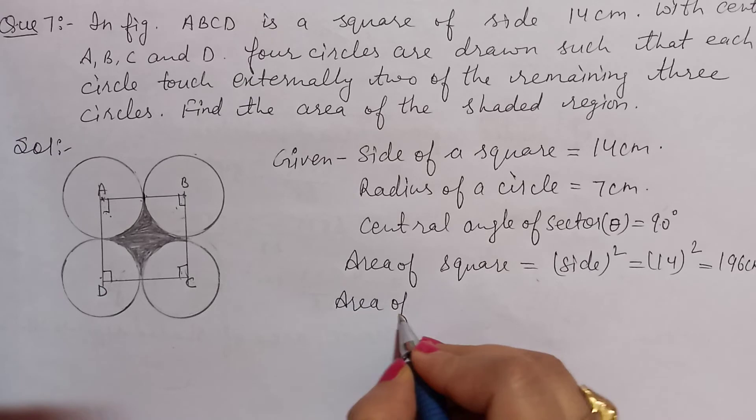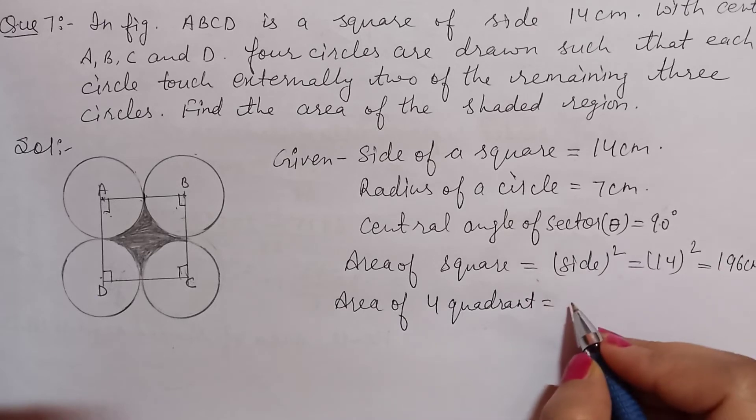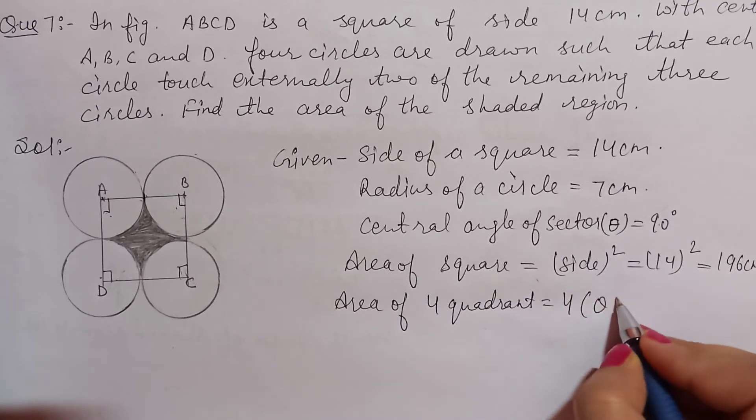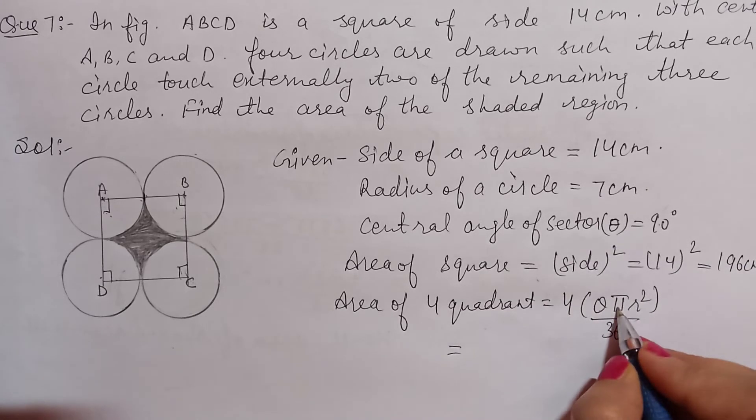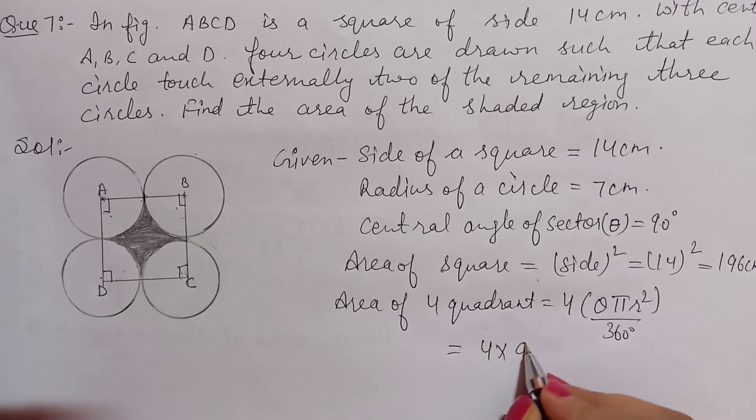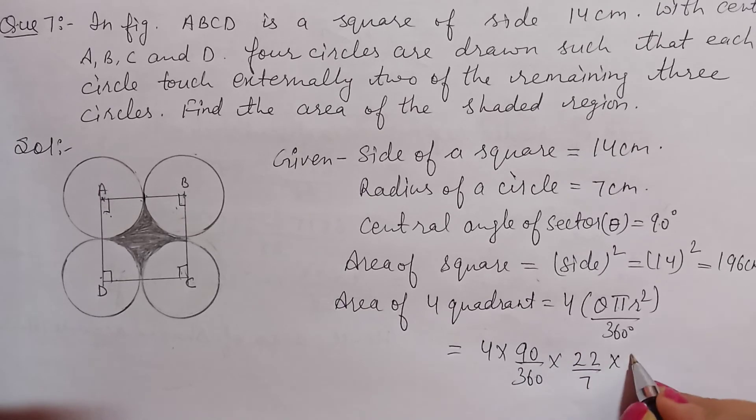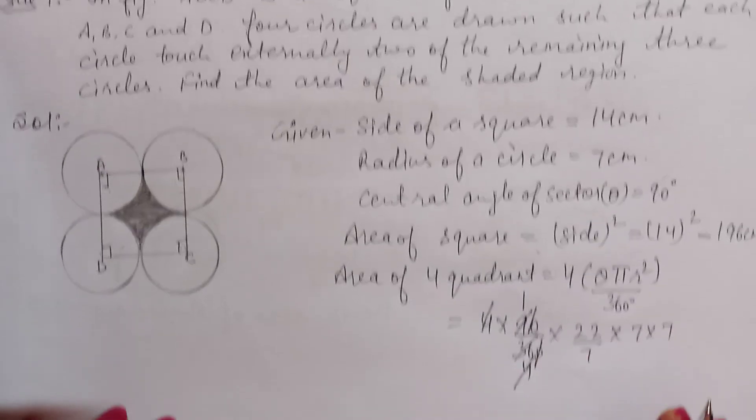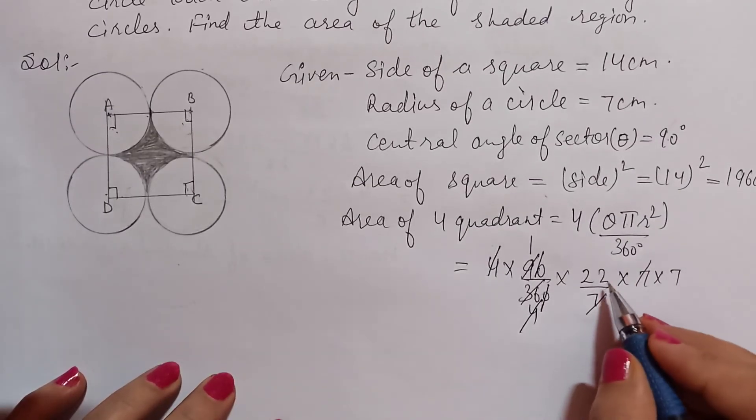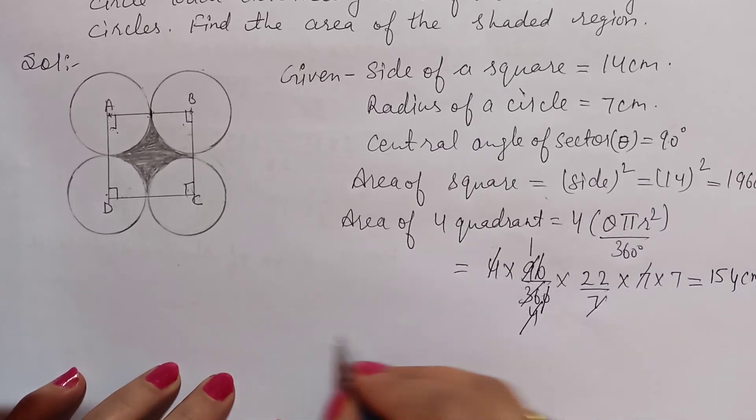Now you will remove area of 4 quadrants. That will be 4 times theta pi r squared upon 360. The sector area is theta pi r squared upon 360. Here theta is 90, this is 360. Pi value is 22 by 7, and radius is 7. After calculation: 4 times 90 times 22 by 7 times 7 times 7 divided by 360 equals 154 cm squared.